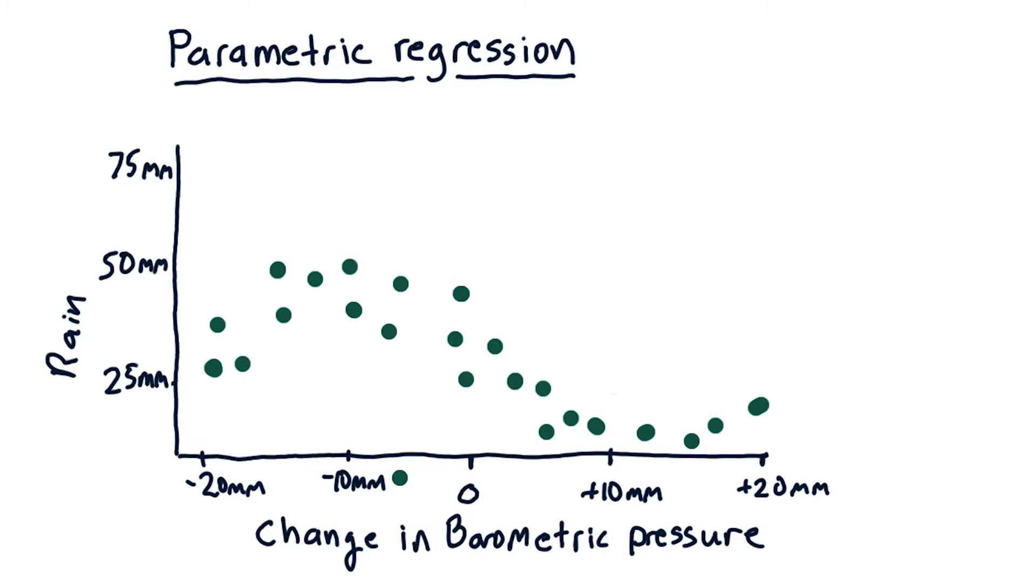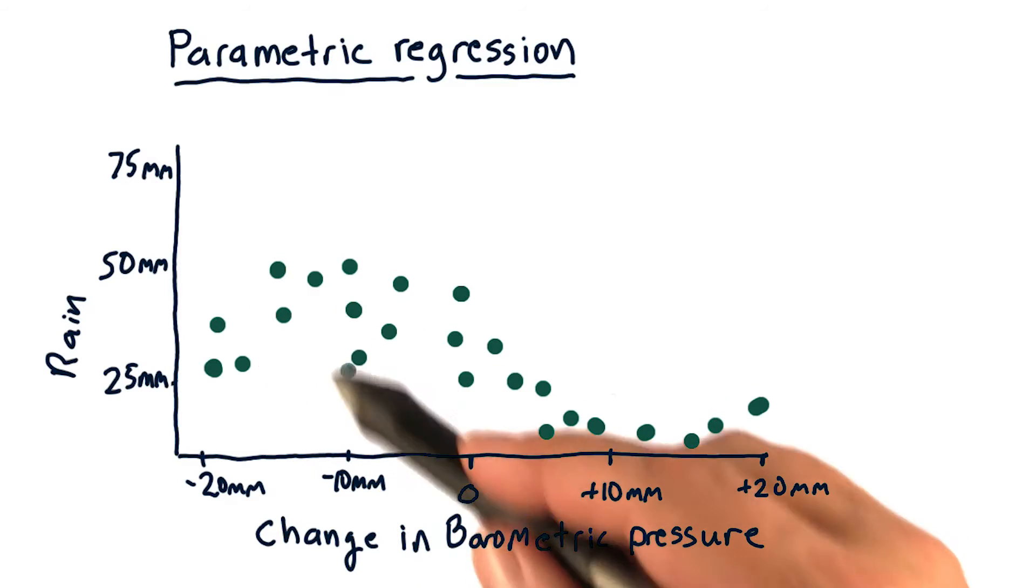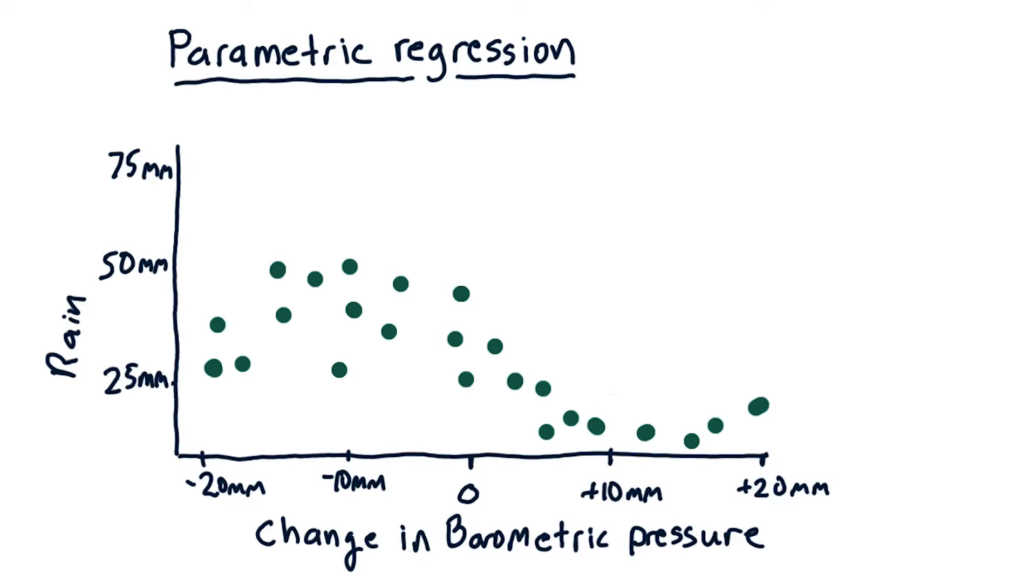We'd like to create a model, based on this data, that when we query it at any particular point, it'll give us a prediction of how much is going to rain. We would measure barometric pressure, or its change, and then estimate how much is going to rain. The classic solution to this problem is to fit a line to the data.